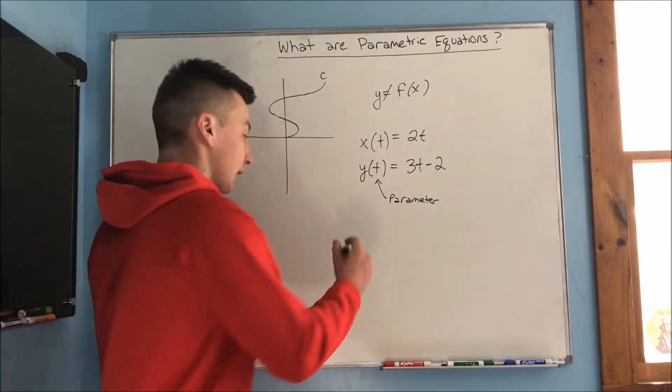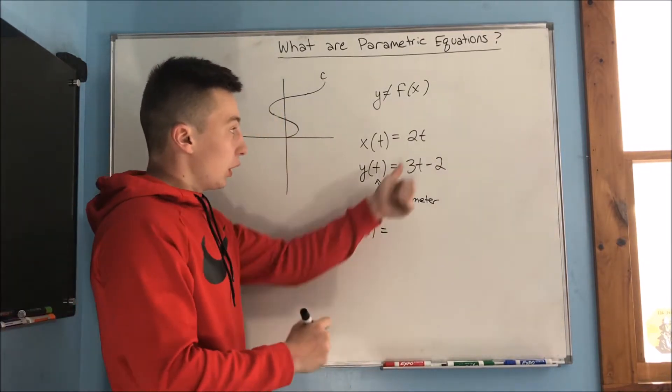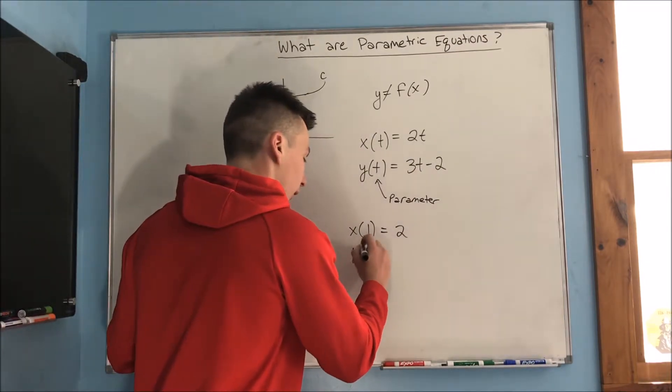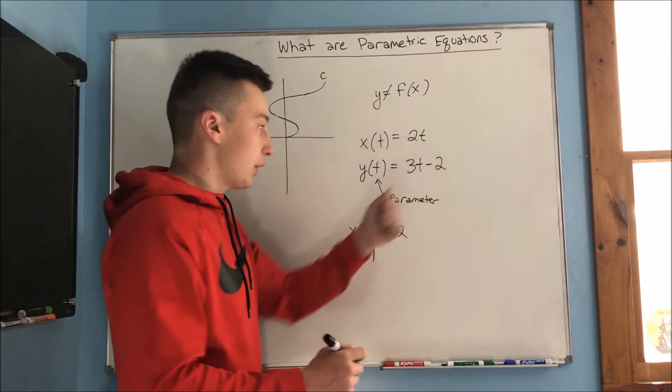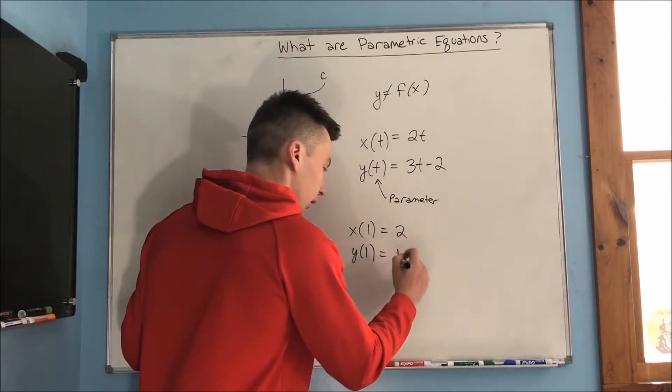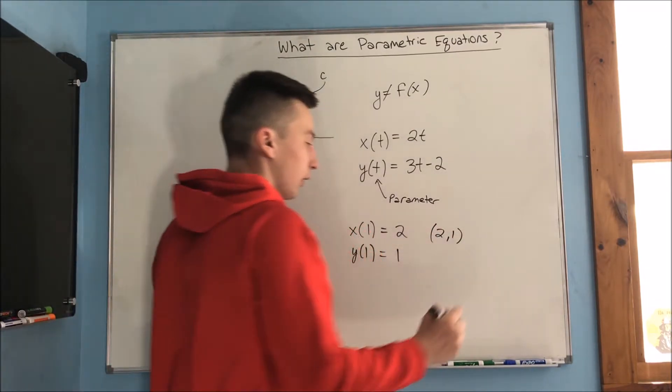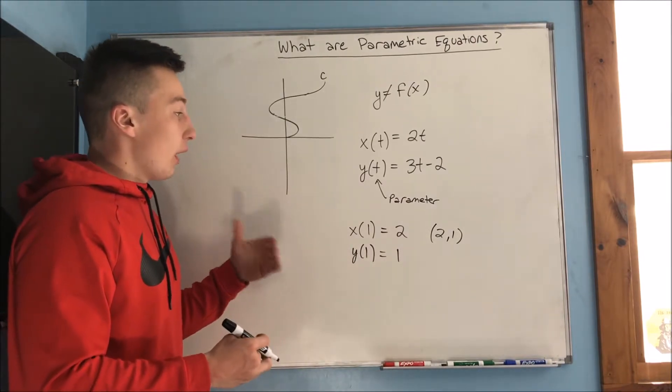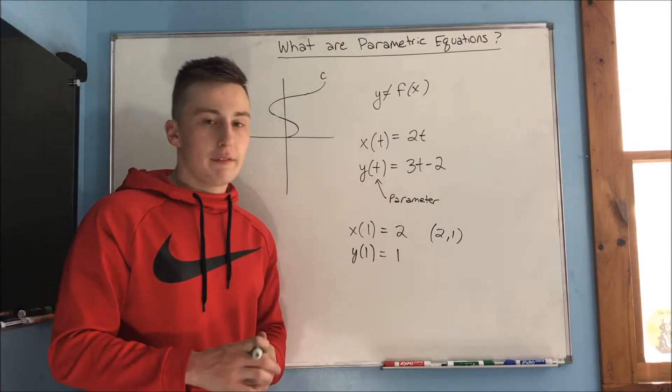So together, like say you put in that the time is 1, so x of 1 would be 2, and y of 1 would be - well, you put a 1 in here, 3 minus 2 is going to be 1 - so you get an x-y pair. You'll get an x-y pair here of (2, 1) at time 1. Then you would plot that up on the curve, wherever that fits in.